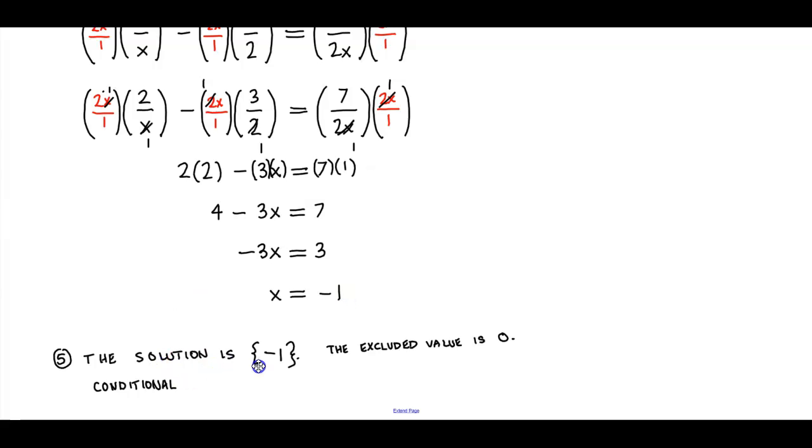So the solution set is negative 1, and the excluded value is 0. This is a conditional statement because we have one unique solution that we can substitute back into the problem.